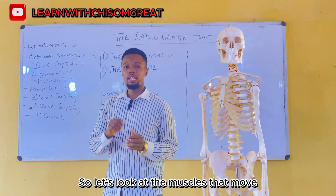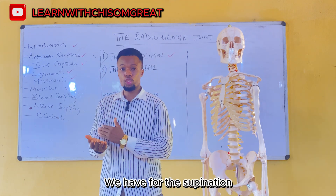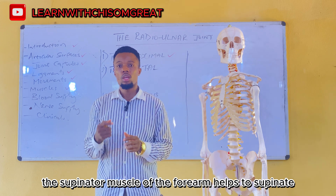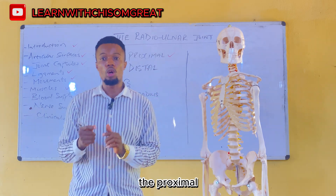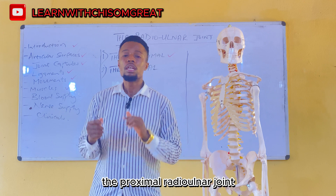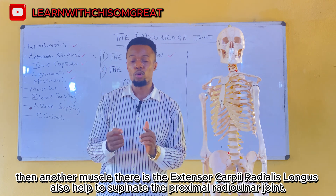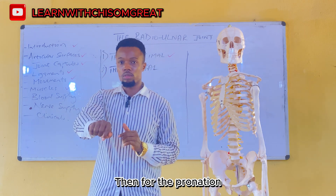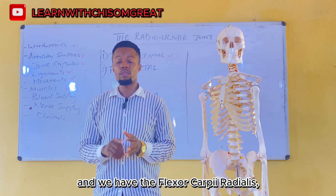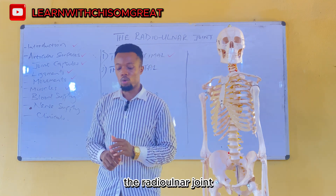The muscles that move the proximal radioulnar joint: for supination, we have the supinator muscle, the biceps brachii, and the extensor carpi radialis longus. For pronation, we have the pronator teres, the pronator quadratus, and the flexor carpi radialis. These three muscles help to pronate the radioulnar joint.